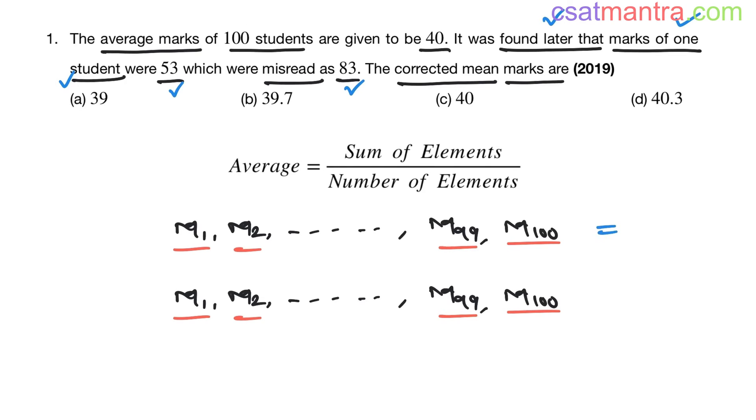His actual marks are 53, but misread as 83. The marks of remaining students are as they are. It is just the marks of the 100th student that are misread as 83 instead of 53. This is clear, right?